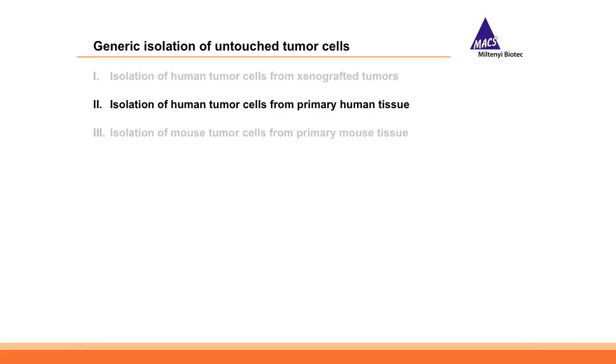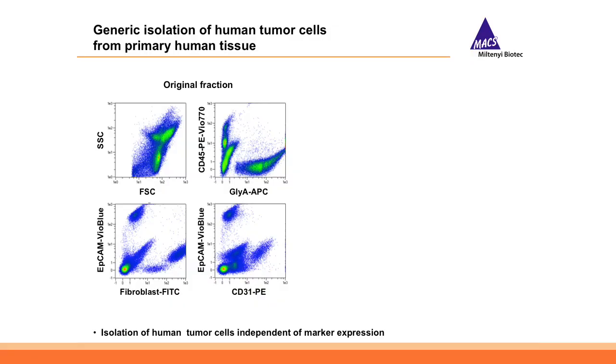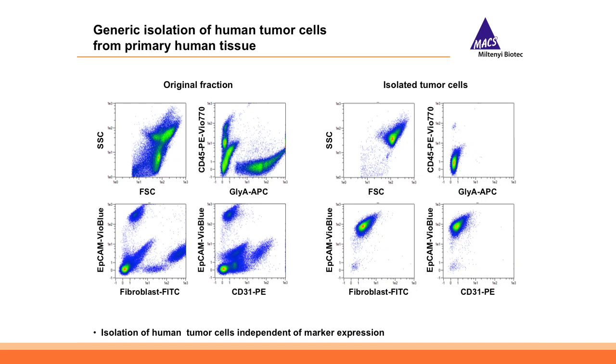The next step — isolation of human tumor cells from primary human tumors — uses the same principle. However, it's more challenging because we cannot use species-specific antibodies. We performed the cell surface marker screening of about 450 antibodies to define epitopes expressed on normal human tissues and infiltrating cells, but not on all kinds of human tumor cells. After dissociation you see a very heterogeneous picture with major contaminants including white blood cells, red blood cells, fibroblasts, and endothelial cells. Applying this 20-minute procedure gives very nice and homogeneous samples of human tumor cells.